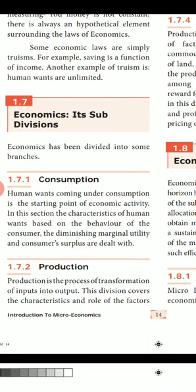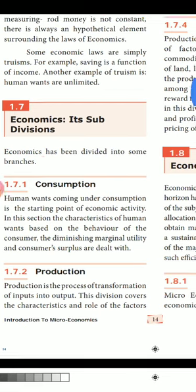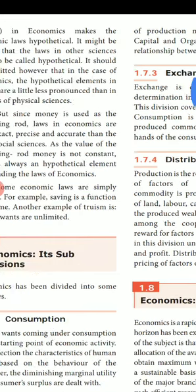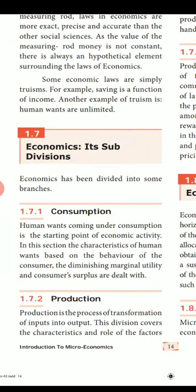Production is the process of transformation of inputs into output. This division covers the characteristics and role of the factors of production, namely land, labor, capital, and organization, and also the relationship between input and output.